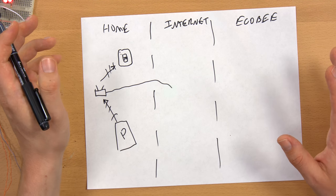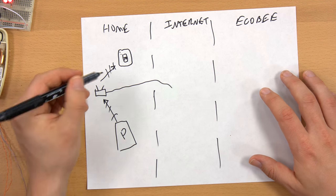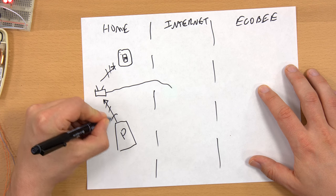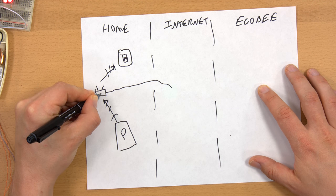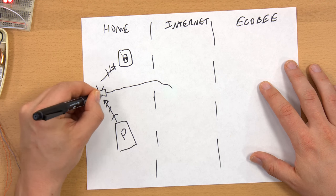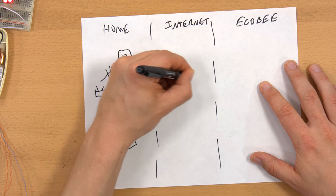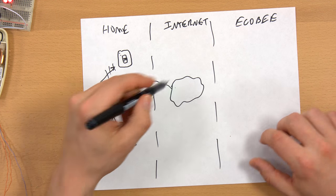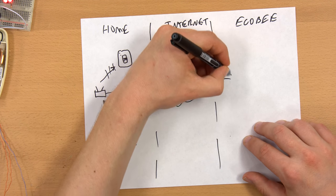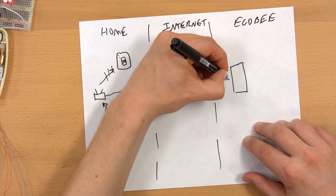What in fact it does is your phone sends a message through your access point router, through the internet, through whatever it goes through on the internet, to an Ecobee server.